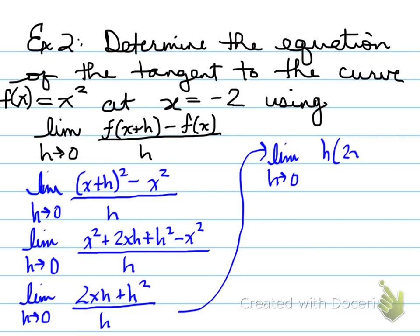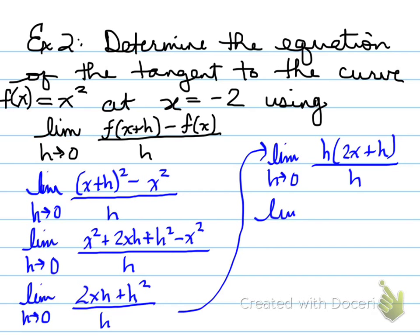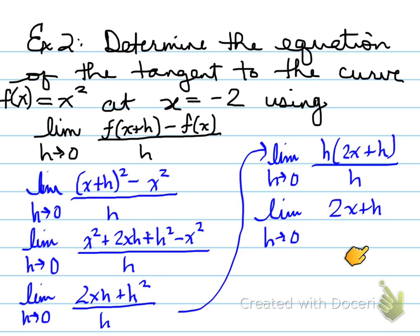So we take the limit as h approaches zero of h(2x + h) over h — common factoring an h out of both 2xh and h². That gives us h(2x + h) over h. Those h's cancel. And once they cancel, we get the limit as h approaches zero of 2x + h.